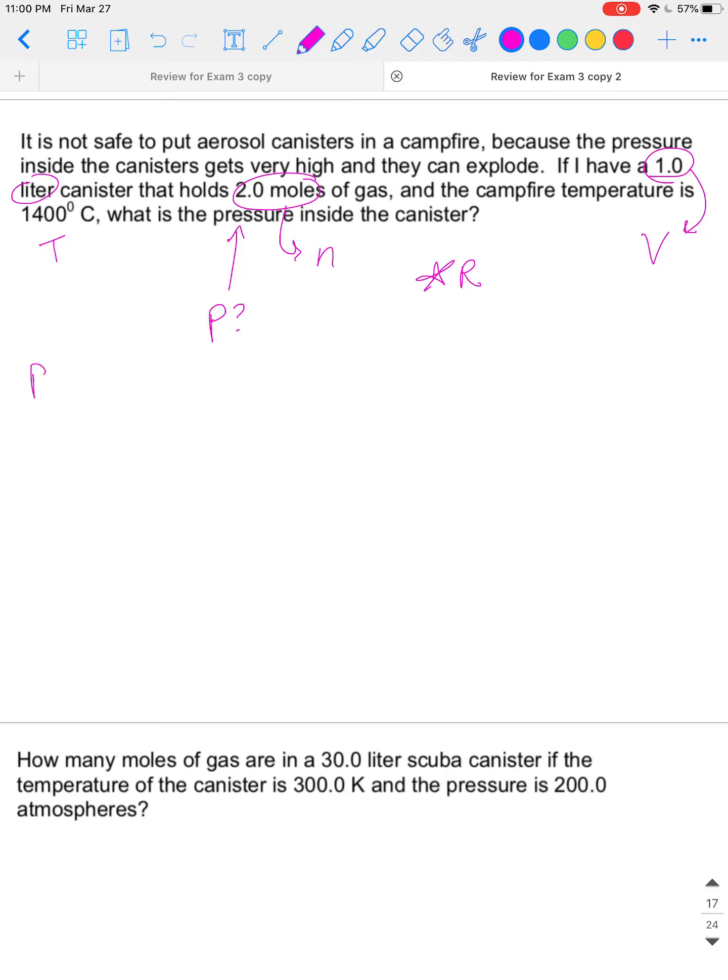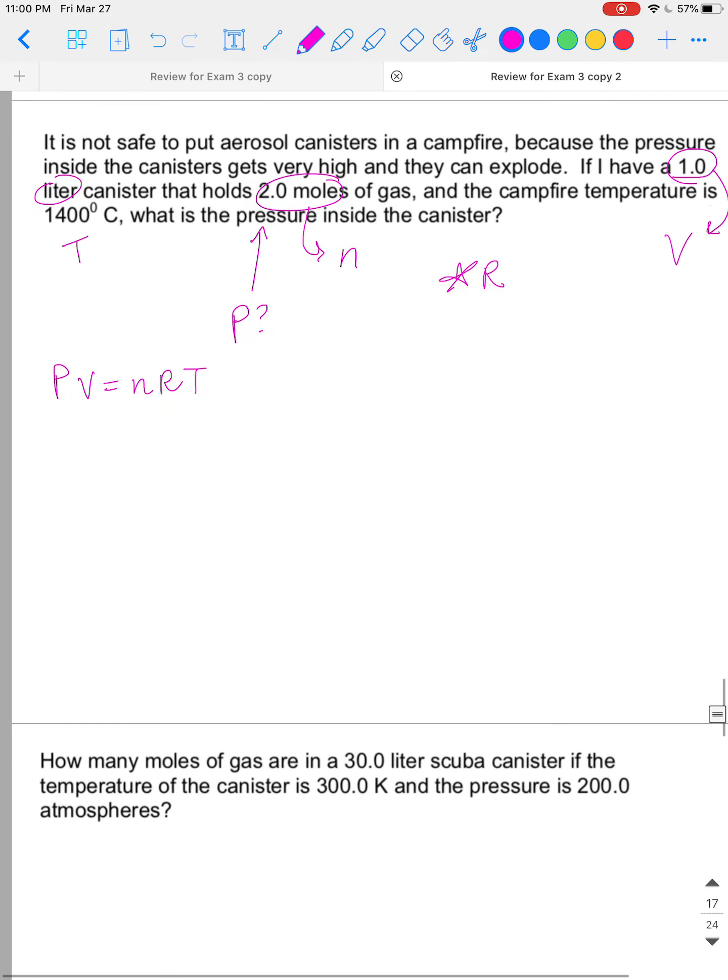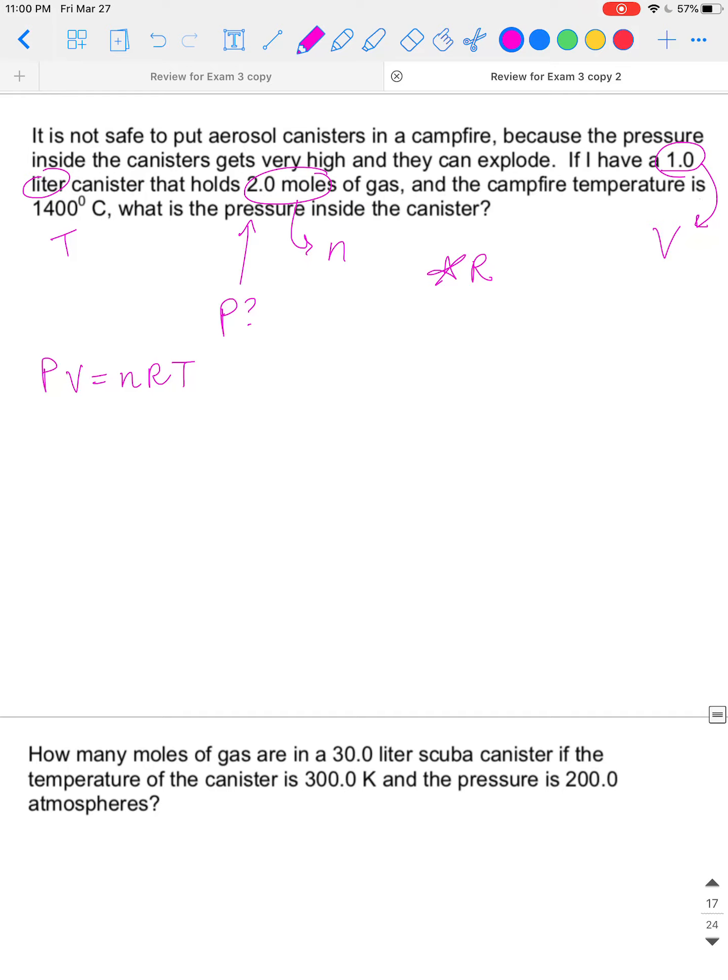So we'll write out PV equals NRT. Just like in the problem before we were solving for pressure. Again, the question is asking what is the pressure? So we need to rearrange the equation to get pressure by itself. So we'll divide both sides by volume and you get pressure equals NRT divided by V. Remember before we can just throw these numbers into the equation, R equals 0.0821 and the units on that are liters times ATM over moles times Kelvin.